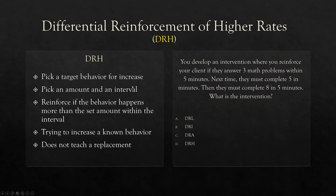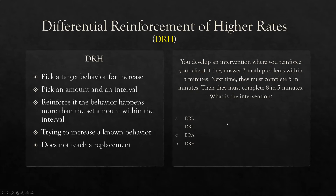What are we putting on extinction? If the behavior doesn't happen more than our set amount in the time, no reinforcement is delivered — it's withheld. You develop an intervention where you reinforce your client if they answer three math problems within five minutes. Next time they must complete five in five minutes, then eight in five minutes. We've picked an amount and interval, and we're slowly increasing to higher rates. The intervention is clearly DRH.